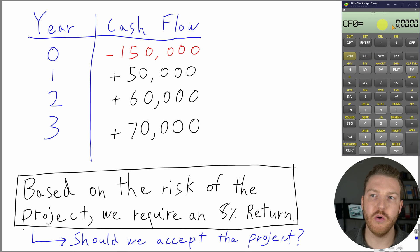Cash flow zero means the cash flow at time zero or today. For us, that is negative $150,000, so let's type in $150,000, and then hit this negative sign here, and then enter. Now we've locked that in.